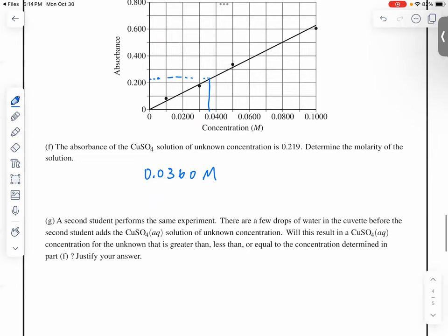Okay. And then a second student performs the same experiment. There are a few drops of water in the cuvette before the second student adds the CoSO4 solution of unknown concentration. Will this result in a CoSO4 concentration for the unknown that is greater, less than, or equal to the concentration determined in part F? Which it will be? Very good.